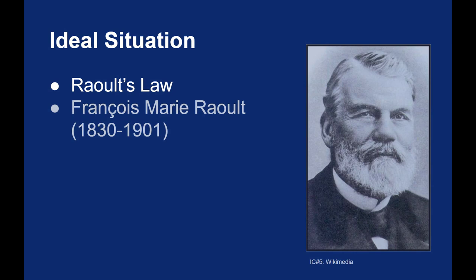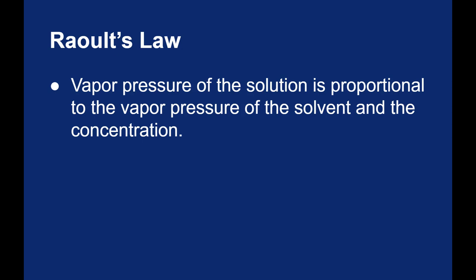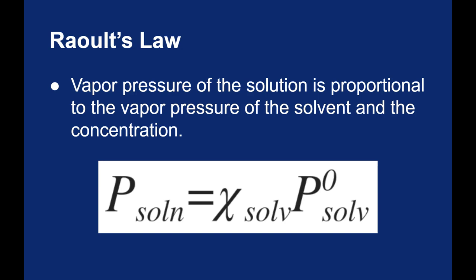We are going to follow Raoult's law. Raoult relates the vapor pressure of a solvent to the concentration of the solvent. He says that the vapor pressure of the solution is proportional to the vapor pressure of the solvent and its concentration. To find that concentration, we're using mole fraction. Raoult's law says that the vapor pressure of the total solution will equal the mole fraction of the solvent times the pressure of the pure solvent. That's what that P-naught solvent means.